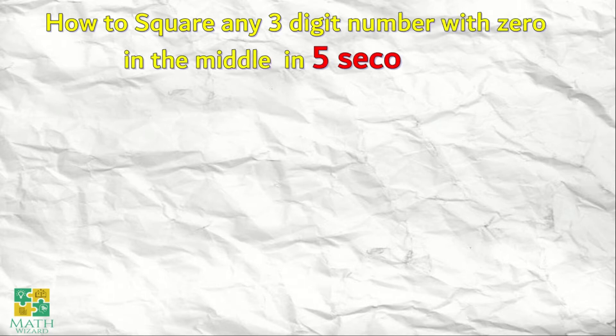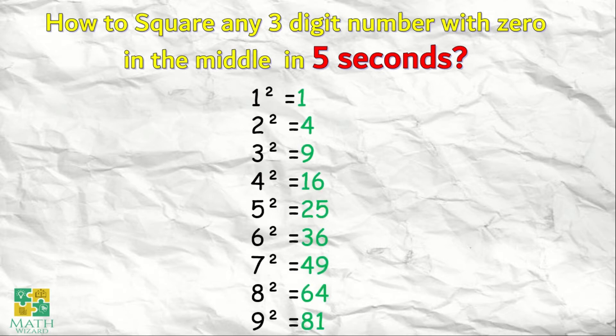So, how to square any three-digit number with zero in the middle in five seconds? The first thing you need to know to answer it in less than five seconds is you must have the squared numbers memorized. One squared is one. Two squared is four. Three squared is nine. Four squared is sixteen. Five times five is twenty-five. Six times six is thirty-six. Seven times seven is forty-nine. Eight times eight is sixty-four. Nine times nine is eighty-one. You must memorize these to answer in just five seconds or less, for any three-digit number with zero in the middle.